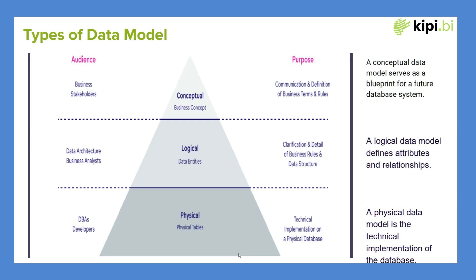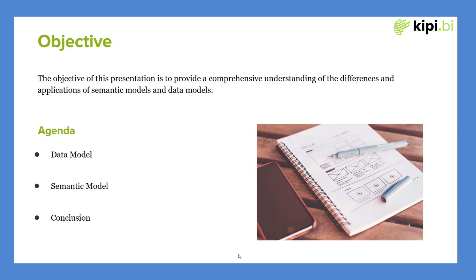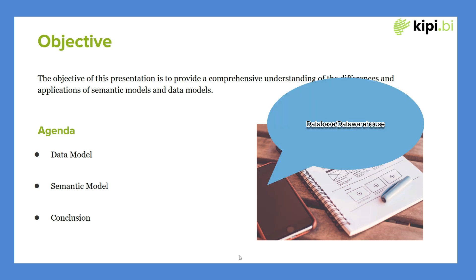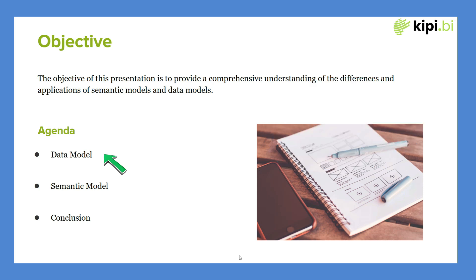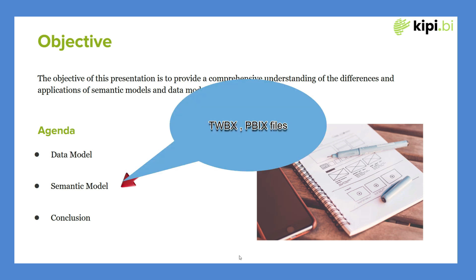If we talk about the traditional data model, it passes through three different stages: conceptual, logical, and physical. In a business intelligence solution, you first start with data modeling at the data warehouse or database level. When this data warehouse or database is available to your BI tools like Tableau or Power BI, you again create a semantic model specific to your project or domain. The semantic model is essentially a subset of the data model.